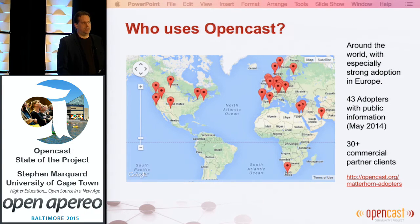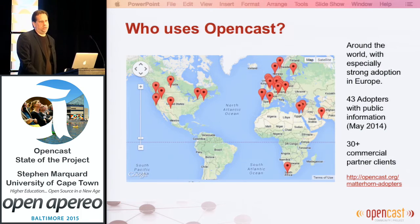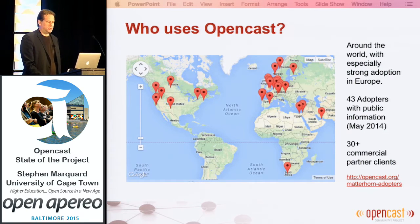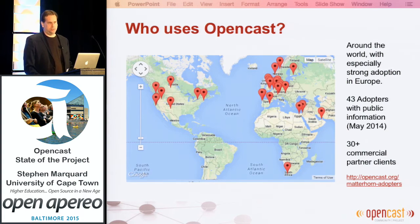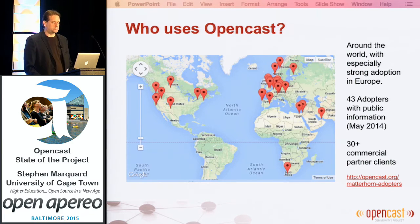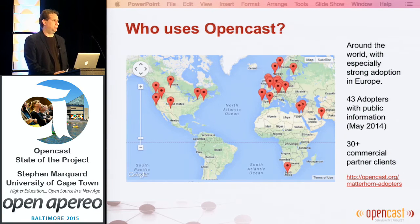OpenCast is used around the world with a footprint in the U.S., a strong footprint in Europe — especially in Germany, Spain, and the United Kingdom — and some adoption in Africa. At our last count in 2014, we had around 40 adopters registered on the OpenCast website, and at least 30 additional OpenCast Matterhorn users through one or more commercial partners. We could be somewhere up to 100 adopters using OpenCast technology, and that number is growing.